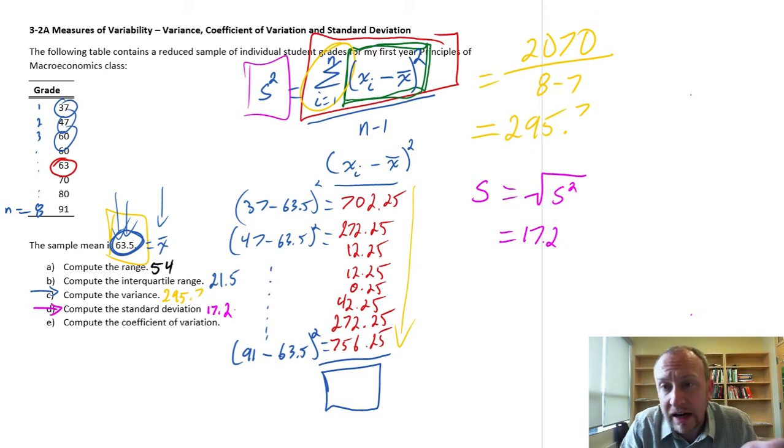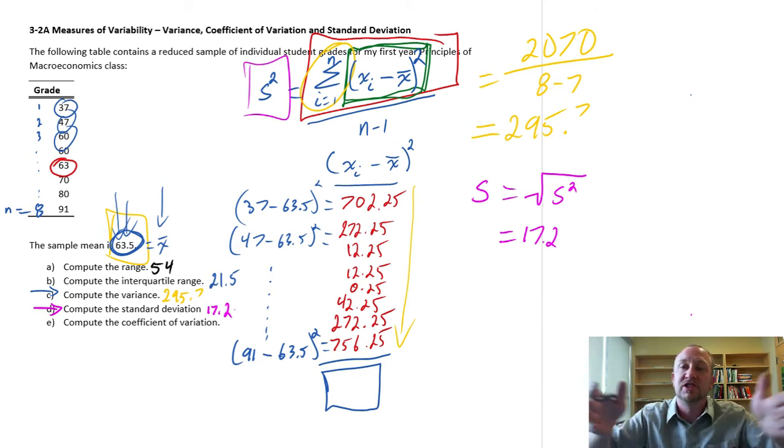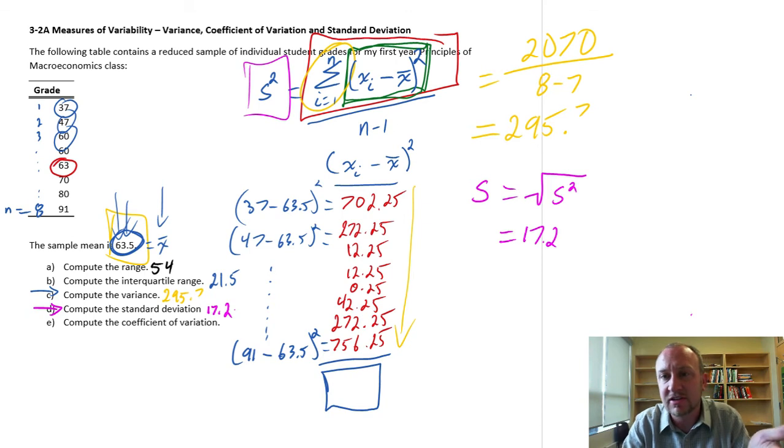So, now, again, the larger the standard deviation, the greater amount of variability there is in that data set. The smaller the standard deviation, the more compact it is. And by that I mean, if it's compact, it means the observations are more tightly packed around the mean. As opposed to something with high variation or large standard deviation would imply that the individual observations in the data set are much more spread apart from the mean. So, here we have a standard deviation of 17.2.